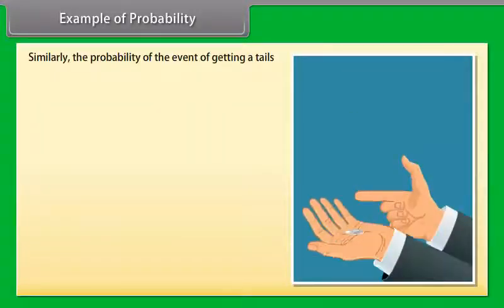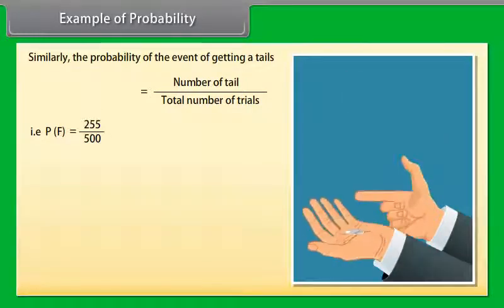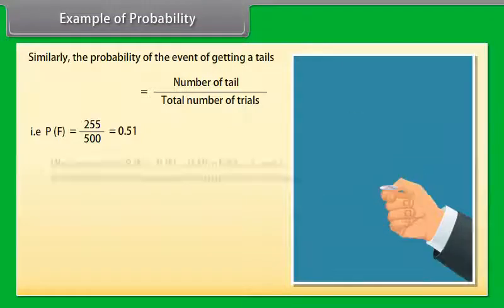Similarly, the probability of the event of getting a tail is equal to number of tails divided by total number of trials. That is, P(F) = 255/500 = 0.51.